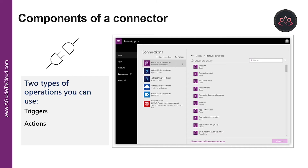An advantage of building custom connectors is that they can be used across different platforms such as Power Apps, Power Automate, and Azure Logic Apps. Once you have established a data source and configured your connector, there are two types of operations: Triggers and Actions. Triggers are only used in Power Automate and prompt a flow to begin. Triggers can be time-based, such as a flow which begins every day at 8 a.m., or based off an action like creating a new record or receiving an email. You will always need a trigger to tell your workflow when to run.